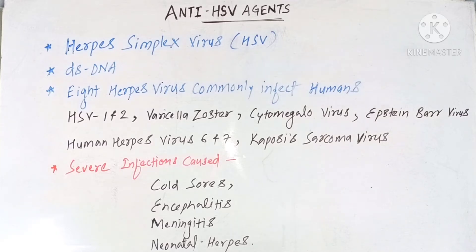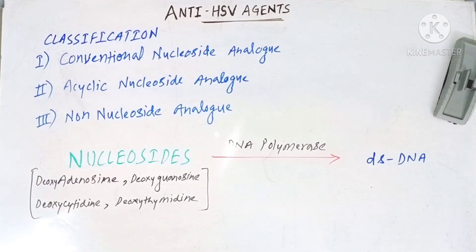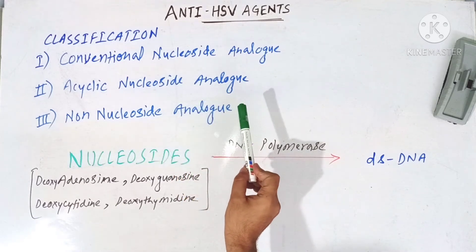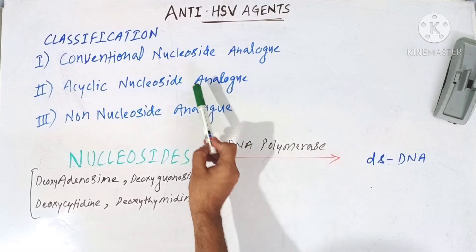This is the general information regarding HSV virus. Now we will see the classification of different categories of drugs used against this HSV virus. All the anti-HSV drugs are broadly classified into three different classes, and the classification is completely based upon the fact that this HSV virus uses nucleosides to synthesize its double-stranded DNA.